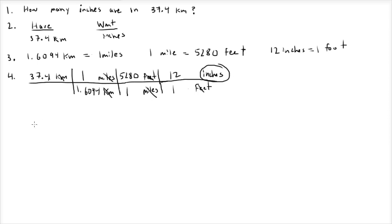Now all we have to do is multiply it out. All these units cancel out, we're left with inches. What we end up having to put in is 37.4 times 1 times 5,280 times 12. That's all the stuff on the top.